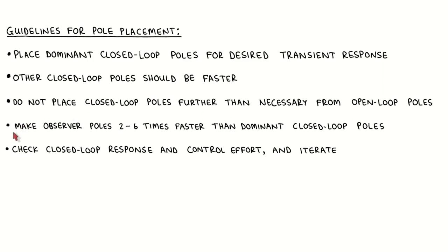Once we have placed the closed-loop poles, we place the observer poles such that they are faster than the dominant closed-loop poles and therefore do not significantly affect the transient response. A good rule of thumb is to make the observer poles two to six times faster than the dominant closed-loop poles. Since the observer signals do not saturate, it might appear that we could make the observer poles much faster, which would make the observer error decay very quickly. However, very fast observer dynamics require very high observer gains, which will make the observer very sensitive to sensor noise and could make the state estimates less accurate. Once the closed-loop and observer poles have been chosen, we can calculate the compensator gains and construct the compensator.